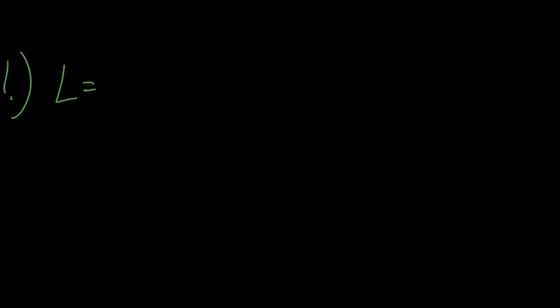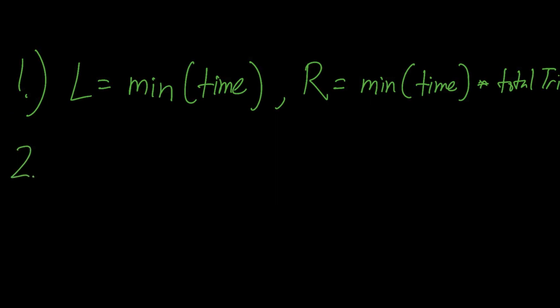Number one, what's your left and right pointer going to be? We already know the shortest possible total trips is one. The shortest possible time that fulfills total trips would be the minimum of our time array. We can also deduce the maximum time that would get the total trips is also just the total trips times the minimum of the time array. Number two, what are we returning? Again, since we're just returning the minimum time that fulfills all the total trips, we can just return the left variable.